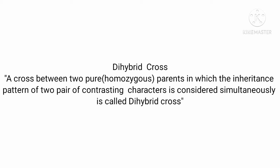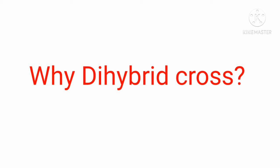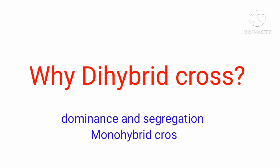We had already learned about the monohybrid cross — 'mono' because we are taking only one pair of contrasting characters. Now here we have two pairs. Mendel established the principle of dominance and segregation on the basis of monohybrid crosses, where the principle of dominance means whatever dominant characters are there will be shown in the F1 generation, and segregation means the separation of gametes.